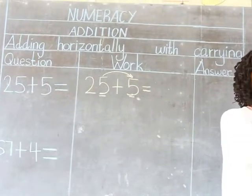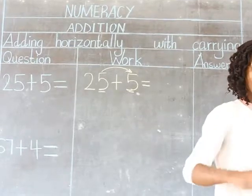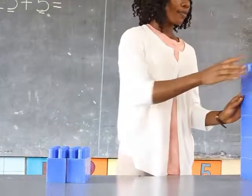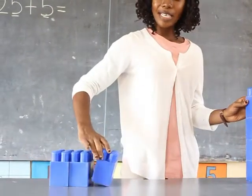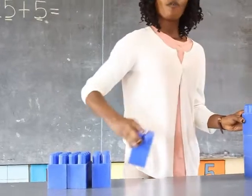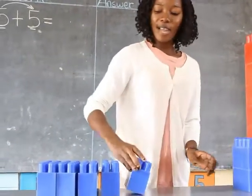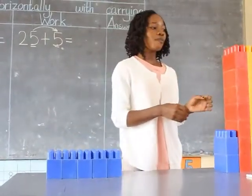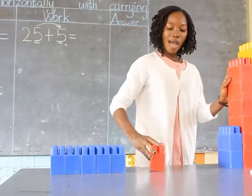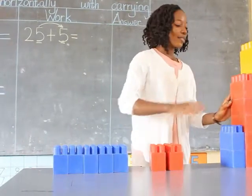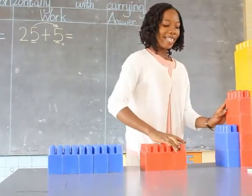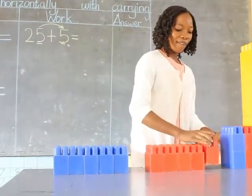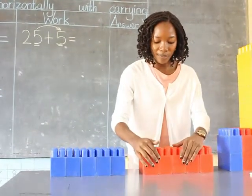Let's count together. 1, 2, 3, 4, 5. The first 5 building blocks are here. Now the second 5 building blocks: 1, 2, 3, 4, 5. The second 5 building blocks are here.